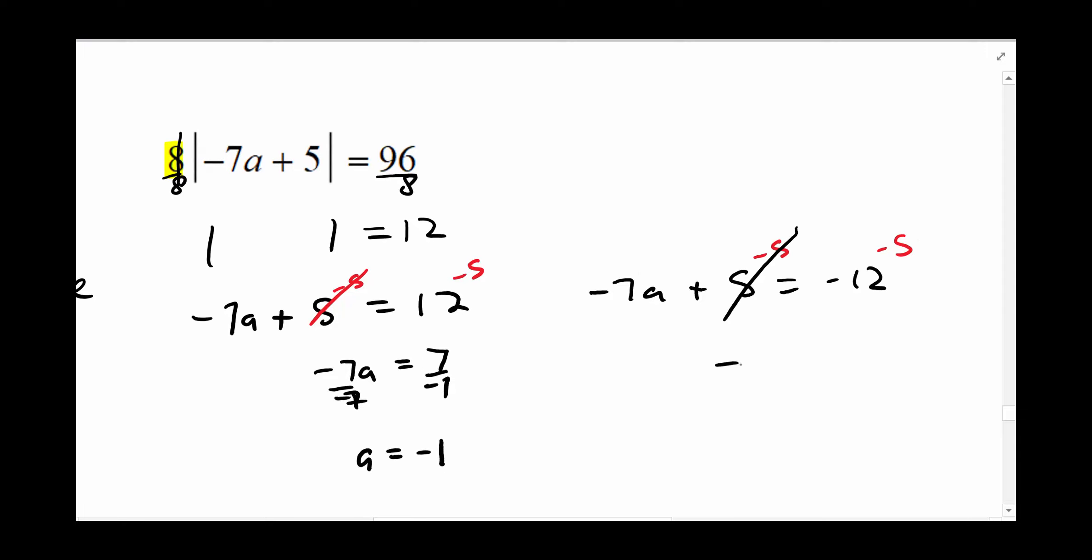Come over here. Those canceled. Negative 7a is equal to, well, negative 12 subtract 5 is negative 17. We're going to divide both sides by negative 7. And we have a is equal to, well, negative divided by negative is a positive. So you end up with 17 sevenths. And you do not have to convert that to a decimal unless the instructions tell you to round to the nearest tenth or something.